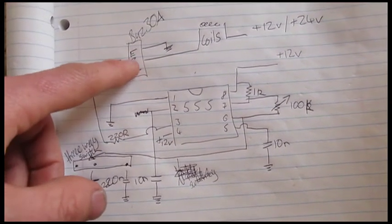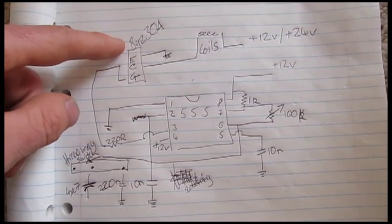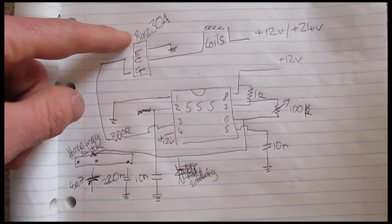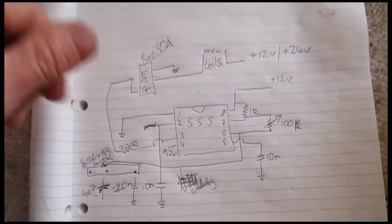That's running the gate of a BUZ30A or any MOSFET that can take about 20 amps. Has to take at least 20 amps, otherwise it's no good.